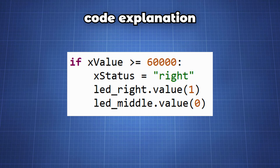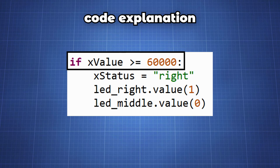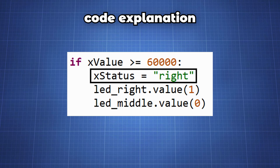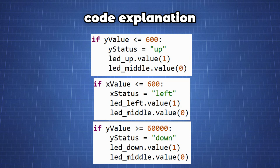Now we know moving the joystick to the right gives a value in a range of 65,000. So we can say that if our x value is greater or equal to 60,000, set the x_status to right and turn on the right LED and set the middle LED value to 0 turning it off.